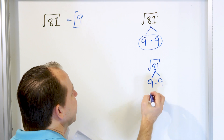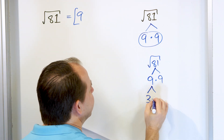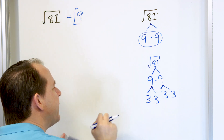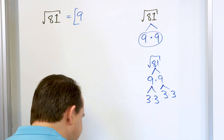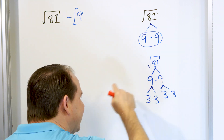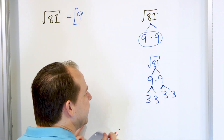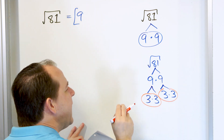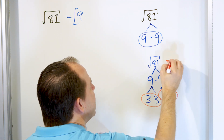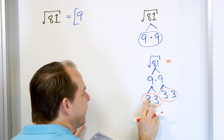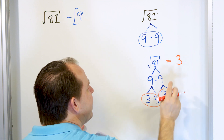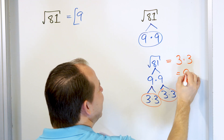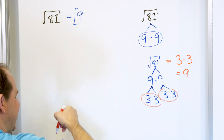Let's say we were kind of asleep and didn't realize we had a pair of 9s. We kept going: 9 can be broken down as 3 times 3, and this other 9 can be broken down as 3 times 3. These are all prime numbers at the bottom — they can't be broken down any further. Now we're at the bottom of the tree looking for pairs. We see a pair of 3s here and a pair of 3s here. For every pair you have, you pull out a single. So this pair of 3s, you pull out a 3; this pair of 3s, you pull out another 3. They're multiplied together, and 3 times 3 is 9. Notice you get exactly the same answer.